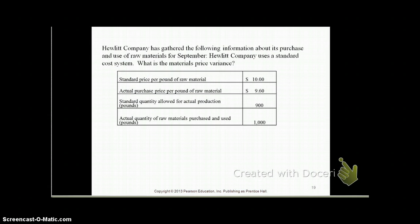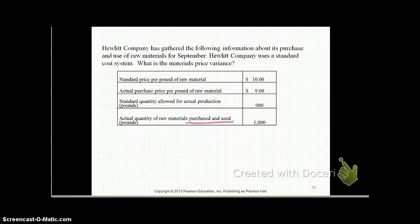We're going to use this question to calculate our direct material variances — both the price and quantity variance. Whenever you're calculating direct material variances, the very first thing you always have to do is check whether the quantity of materials purchased and used are the same. If they're the same, you use one method; if they're different, you use another. Here, we can see that the amount of raw materials purchased and used were both 1,000 pounds — they are the same.